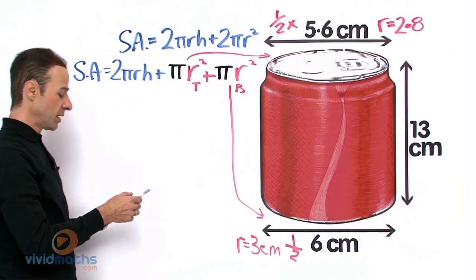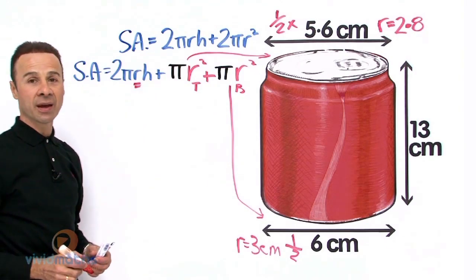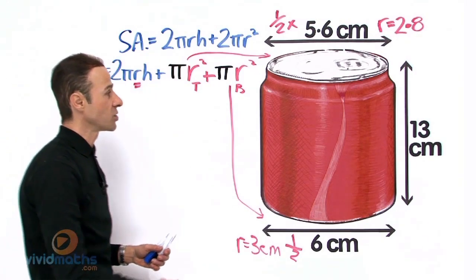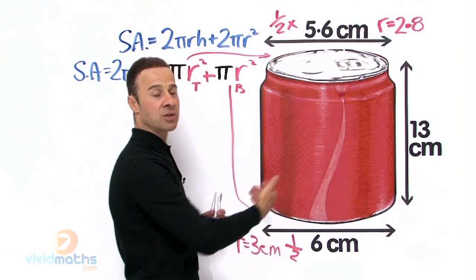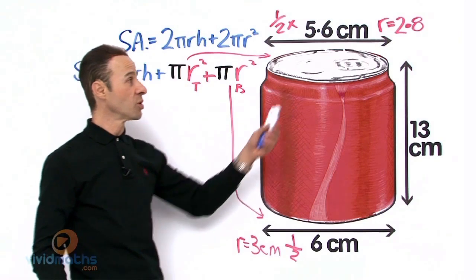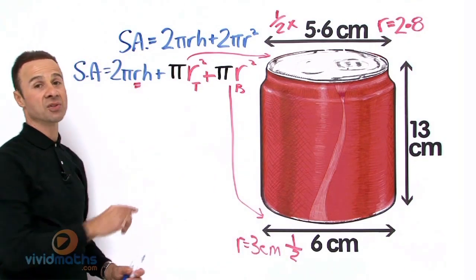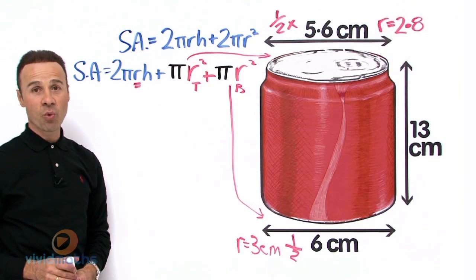Now we have another radius over here. That radius there is the one that affects the curved surface, the round surface here, the red surface. Now the radius we put in there, can you guess, do we use the small one or the big one that goes in there?